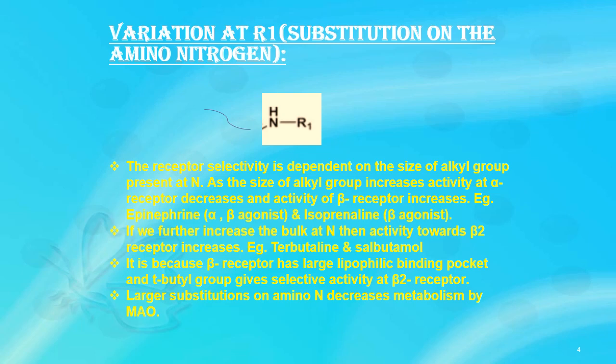If we further increase the bulk on nitrogen, activity towards the beta-2 receptor increases. For example, terbutaline and salbutamol both contain an N-tertiary butyl group, which increases beta-2 selectivity. This beta-2 selectivity occurs because the beta-2 receptor has a large lipophilic pocket, and the tertiary butyl group gives selective activity at the beta-2 receptor.